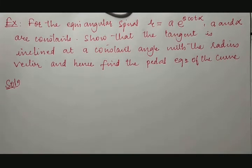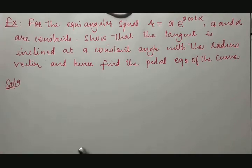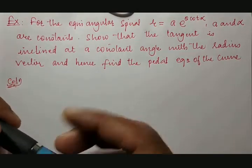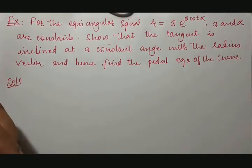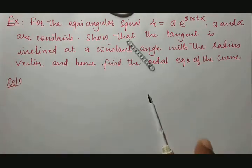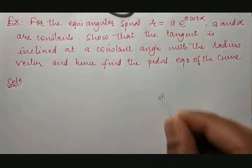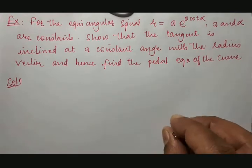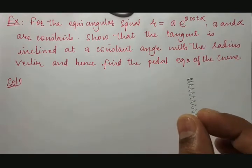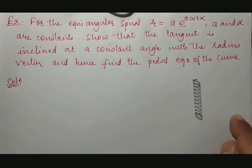First, we need to understand what is the meaning of equiangular spiral. For example, if you take this pen and open it, you will find a spring. This spring, if you see, it is equiangular — you can see the angle. It is equiangular.